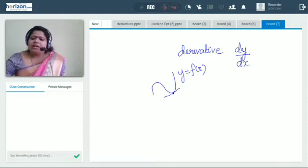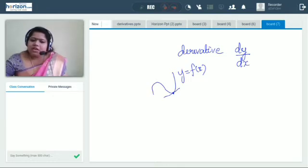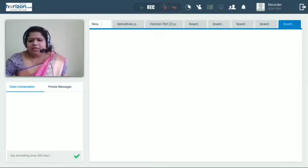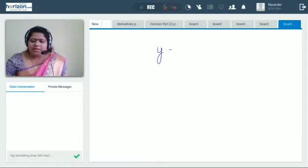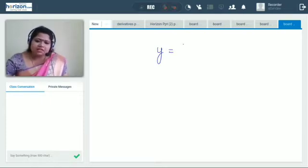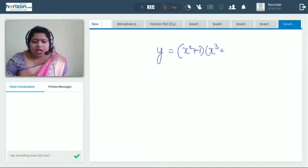So let us know how to find the derivative of a given function. So what they would do is they will give us some polynomials. Let's say we are having two functions together. So first term they have given is x cube plus x plus 5.